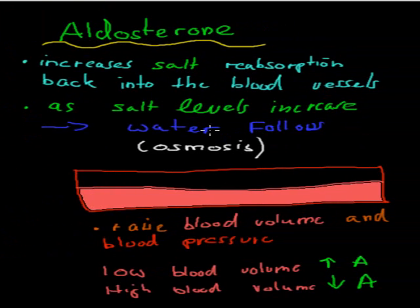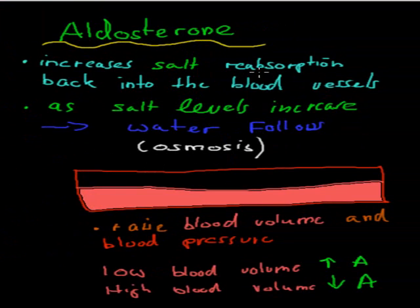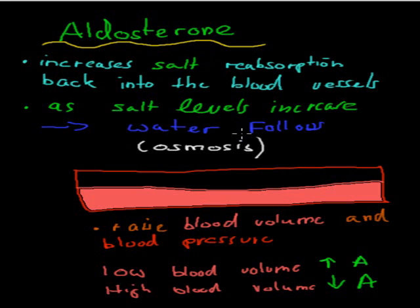The other hormone is aldosterone, and that increases our salt reabsorption back into our blood vessels — from our kidneys back into our blood. What that does is it makes the concentration of salt or solute really high in our blood compared to the kidneys. And remember, with osmosis — water traveling from low solute to high solute — if we pump salt back into our blood vessels, water will follow. So water follows the salt, which increases our water levels in our blood.